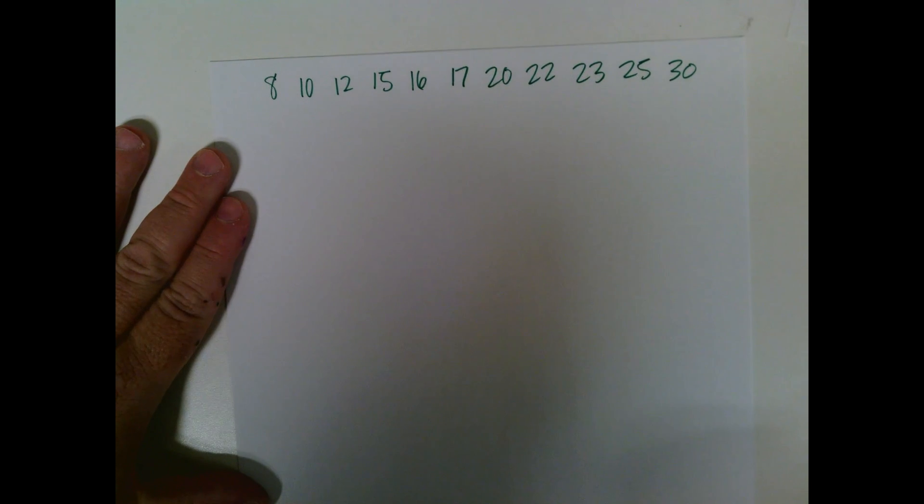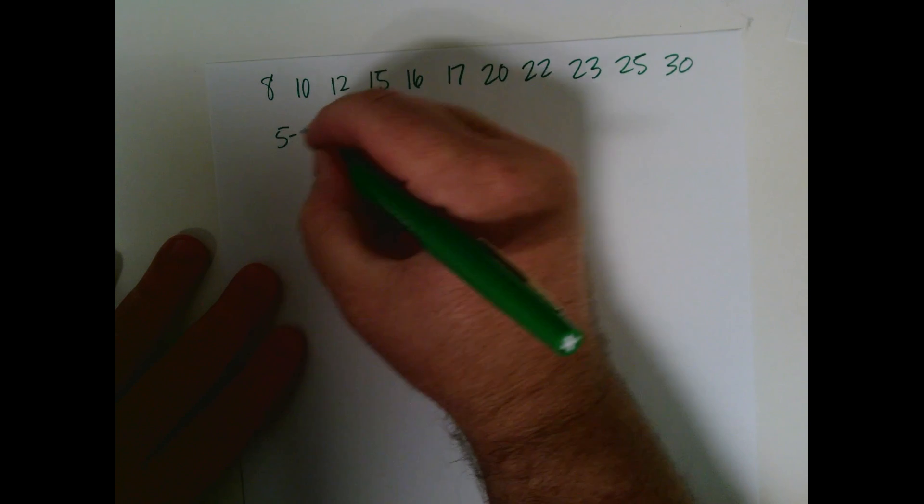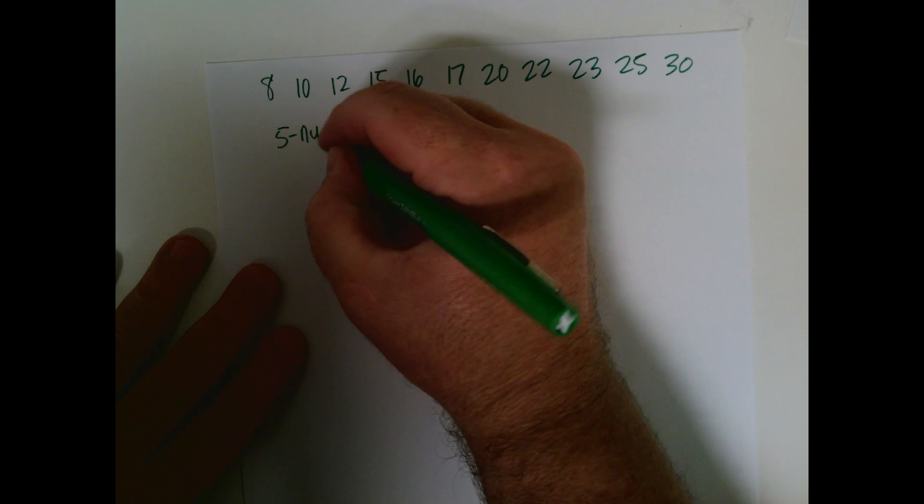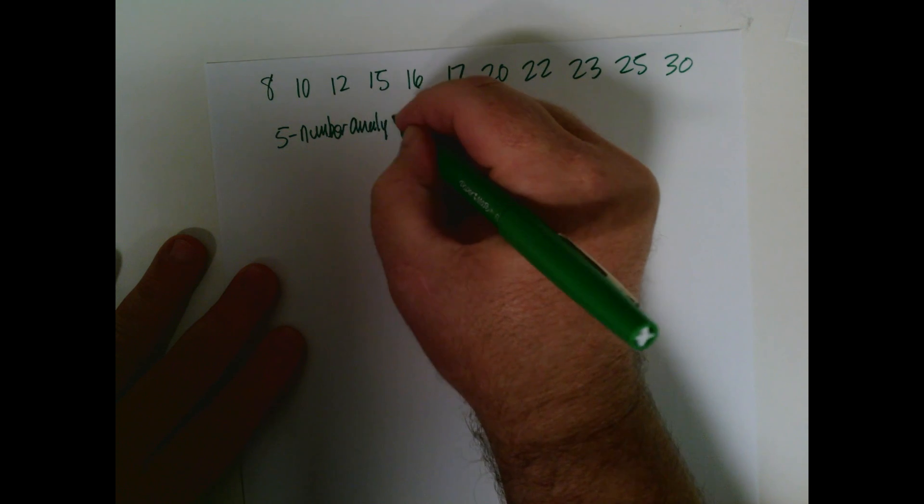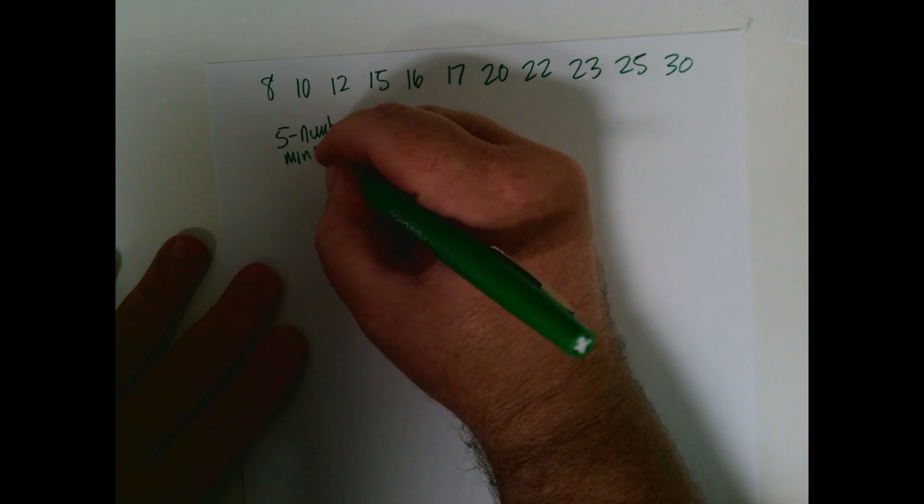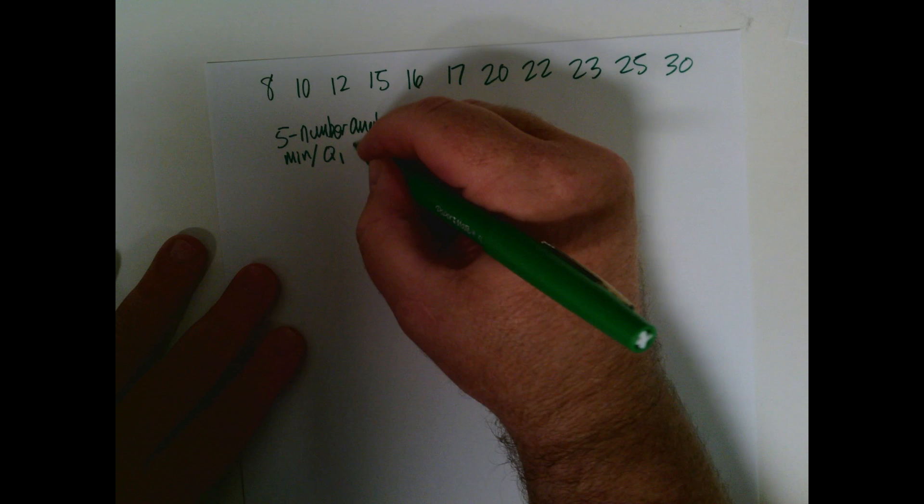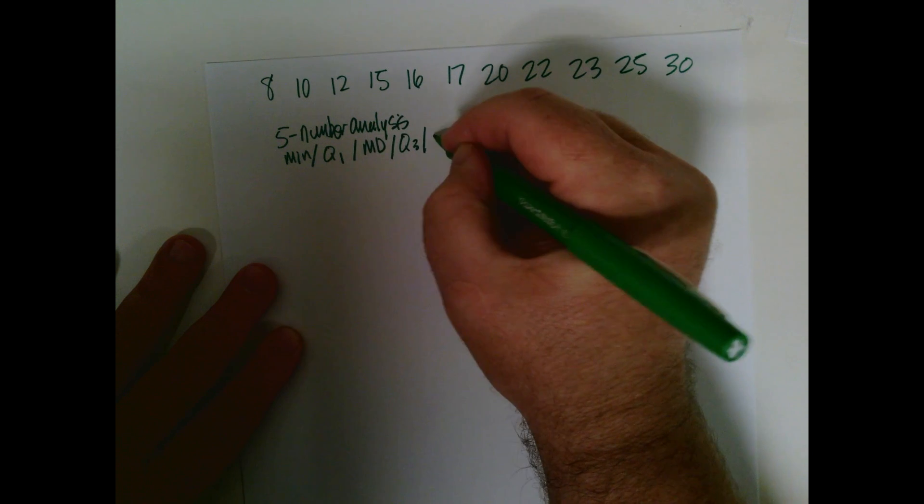All right, so the next thing we're going to do is find the five-number analysis and draw a box plot. Now, if you remember the five-number analysis involves the minimum, that's our first number, the first quartile, the median, the third quartile, and the max.